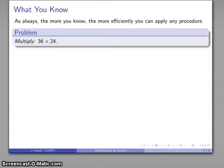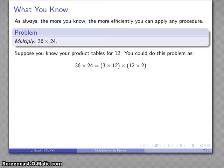Suppose I did know how to multiply by 12. So for example, let's take 36 times 24. If you do know how to multiply by 12, and some of us learned at some point, and we might actually be able to do this as splitting this up. 36 is 3 times 12,